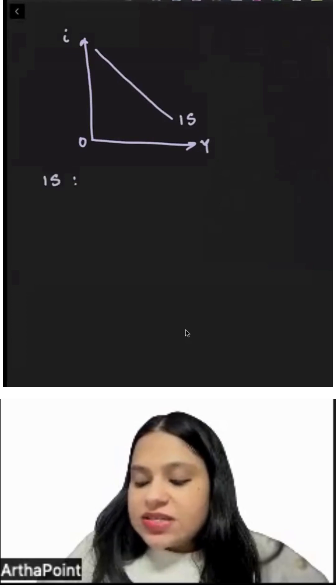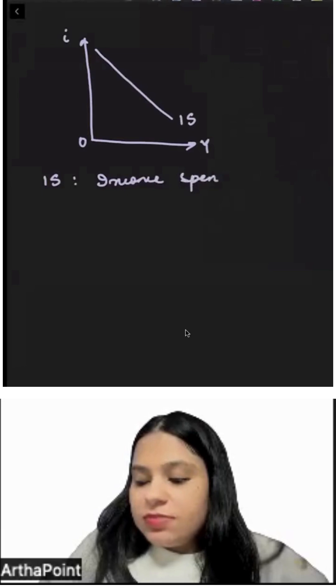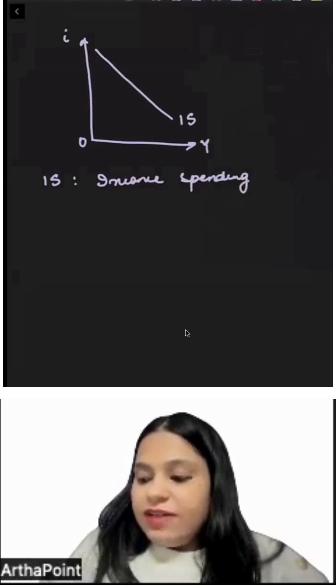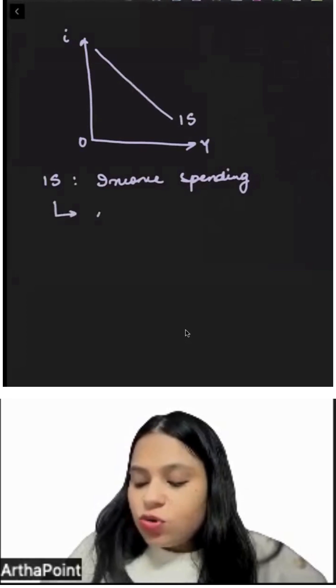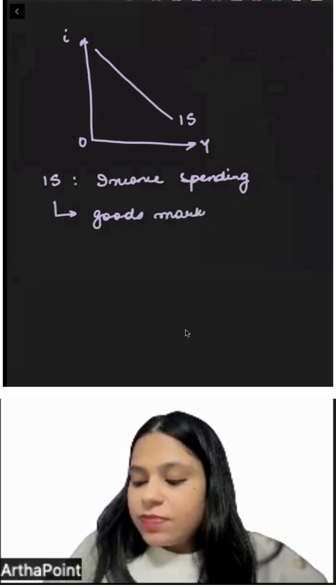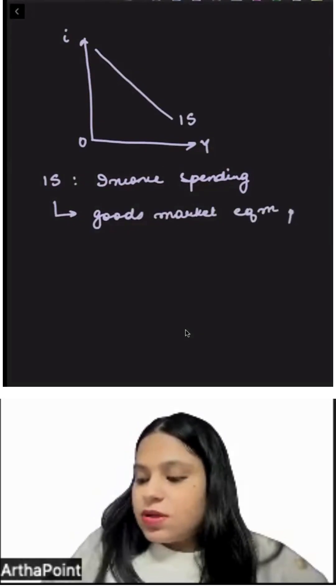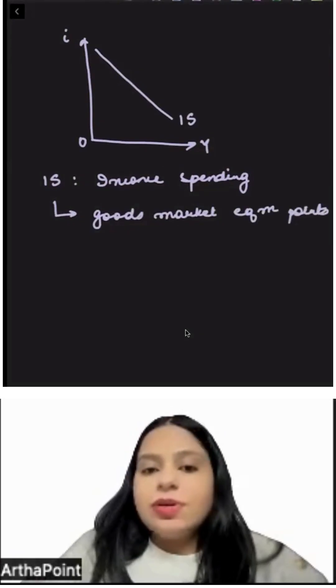The full form of IS curve is Income Spending curve. What this IS curve shows is all goods market equilibrium points.